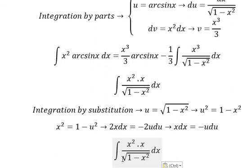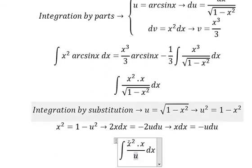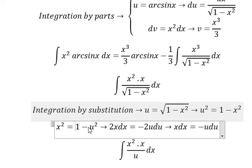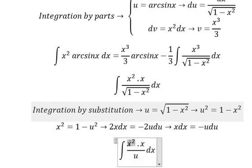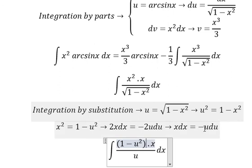So we put the square root of u. The square root will change to u. X square will change for this one. X dx will change for negative u du.